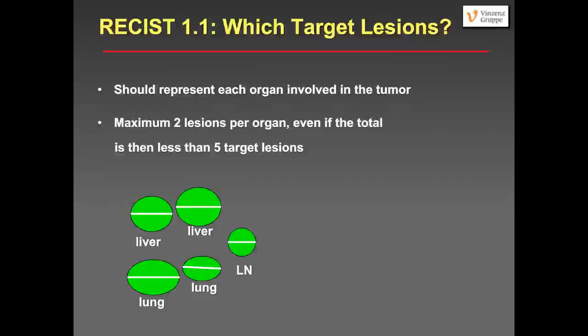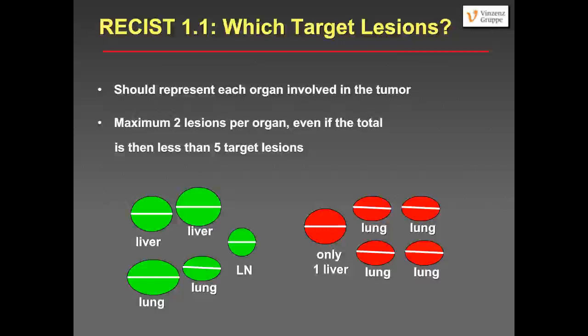Target lesions chosen should represent each organ involved by the tumor, with a maximum of two lesions even if the total is then less than five target lesions. For example, a patient with two liver metastases, two lung metastases, and one big lymph node — you measure these five lesions and get the SLD. For a patient with one liver lesion and four lung metastases, you must not measure all four lung lesions, as that would introduce bias. Only take two lesions per organ.